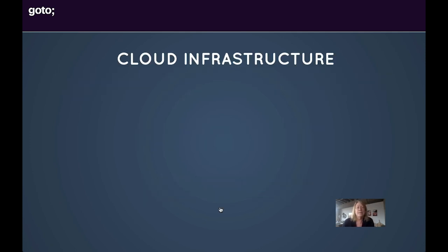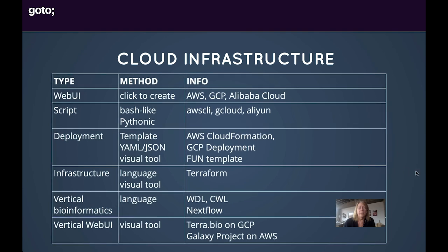When we build a cloud infrastructure or cloud pipelines, we often think in terms of writing some sort of code and we have several choices. We could use a web UI and click, but that's not generally what we do in production. We generally start with a script, whether it's using AWS CLI, GCloud, or something like that. Often we'll use templates — AWS CloudFormation, GCP deployments, Alibaba Cloud Fund templates. Sometimes we want something more vendor-agnostic like Terraform. Some of the work my team has been doing is in bioinformatics, where there are specific infrastructure languages such as WDL (Workflow Definition Language), CWL, and Nextflow.